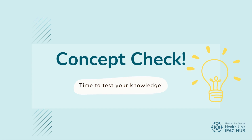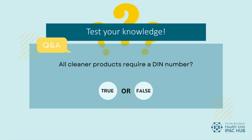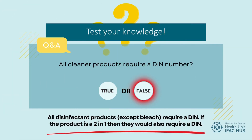Concept check: All cleaner products require a DIN or drug identification number — true or false? The answer is false. All disinfectant products, except for bleach, require a DIN. If the product is labeled as a 2-in-1 cleaner and disinfectant, that would also require a DIN.